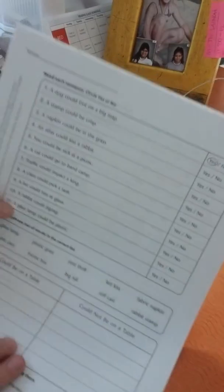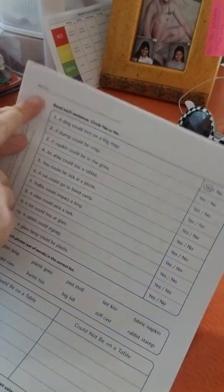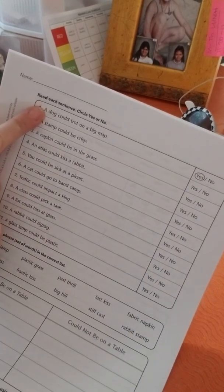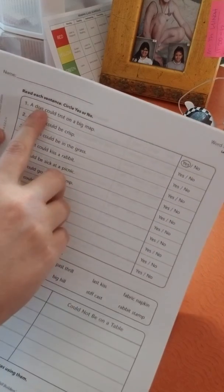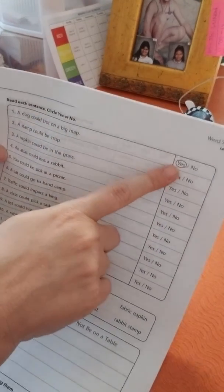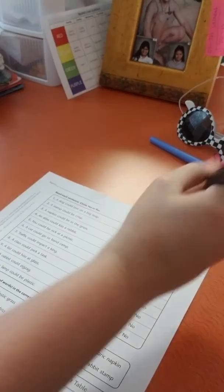So let's go ahead and look at this together. It says read each sentence, circle yes or no. A dog could trot on a big map. So you're just deciding if this is true or not true. Yes, a dog could trot on a big map, so you would circle yes.